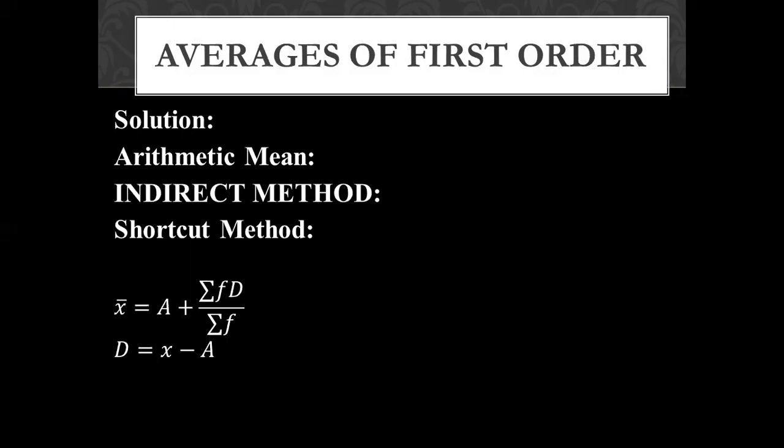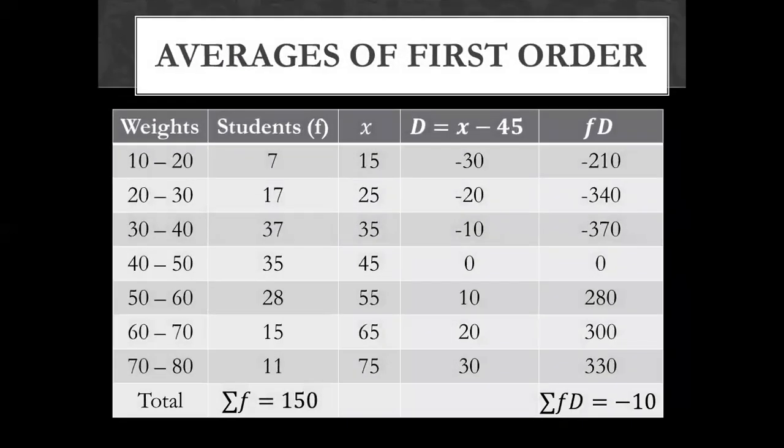If we want to write the shortcut method or coding we will write it well. Now, in the question, we will solve these two requirements. First of all, we have to write the shortcut method. The second name is the deviation method and the second name is the provisional mean method. This is what you have to remember. The shortcut method is equal to A plus summation fD over summation f. A can be assumed value and you can take from the data. So here we have the first step of the procedure. 10 plus 20 divided by 15, 20 plus 30 divided by 25, 30 plus 40 divided by 35, 40 plus 50 divided by 45, then 50 plus 60 divided by 55, 60 plus 70 divided by 65, 70 plus 80 divided by 75.